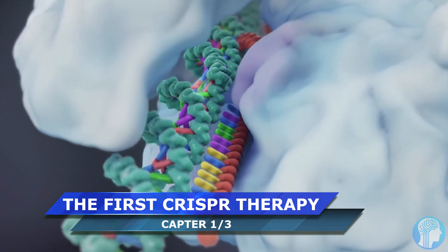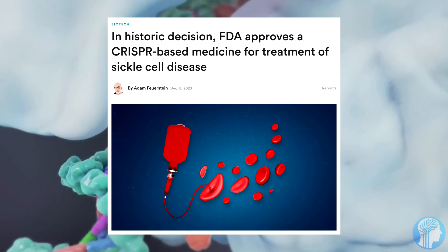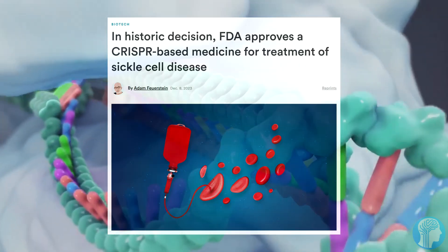Just 11 years after scientists Jennifer Doudna and Emmanuel Charpentier introduced CRISPR gene editing technology, the U.S. Food and Drug Administration has given the green light to the first ever CRISPR treatment in the country.